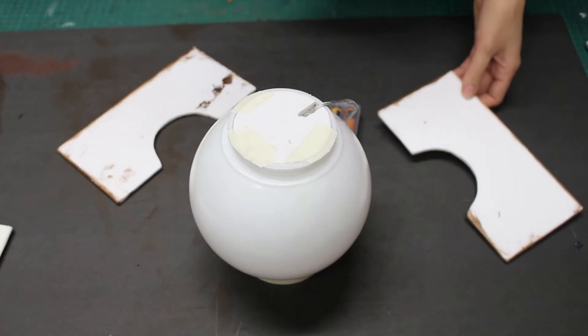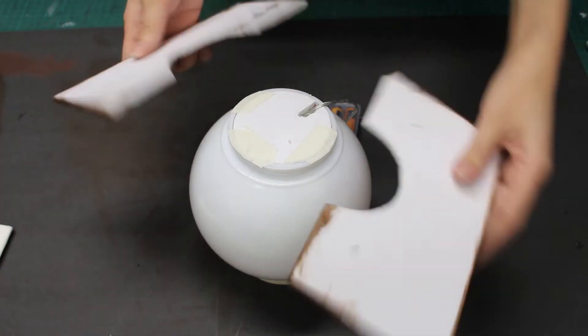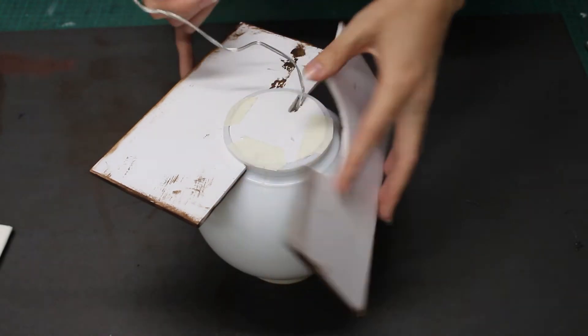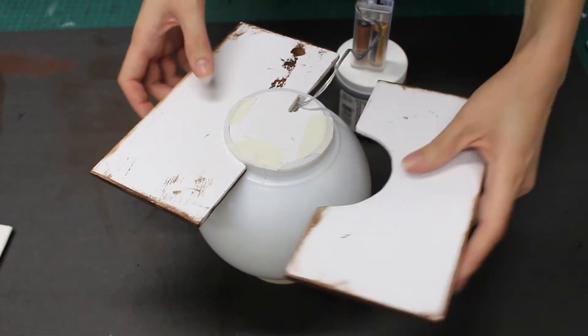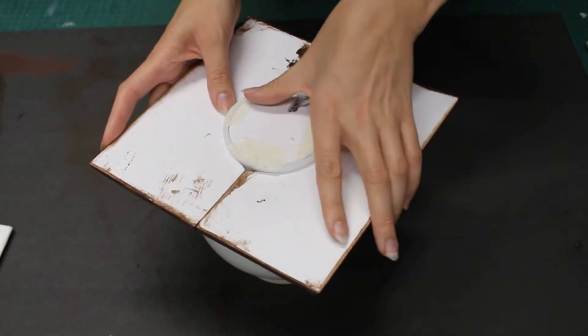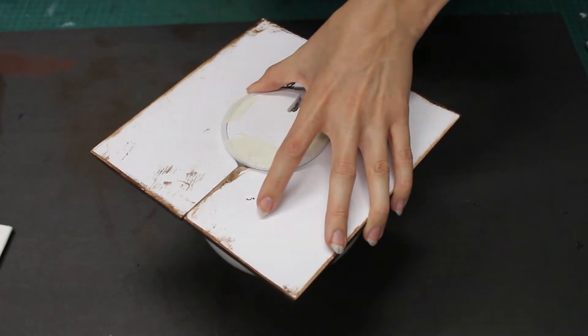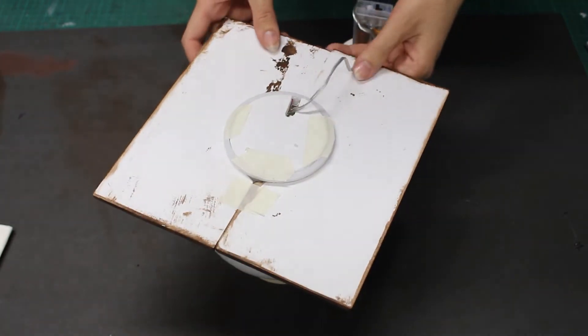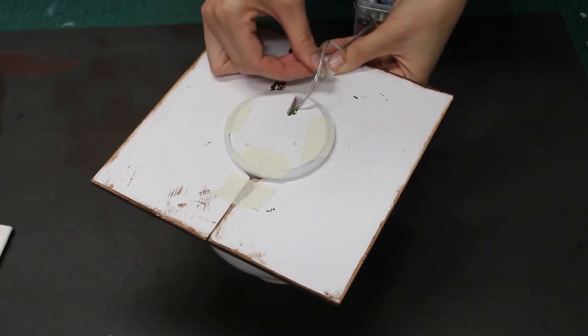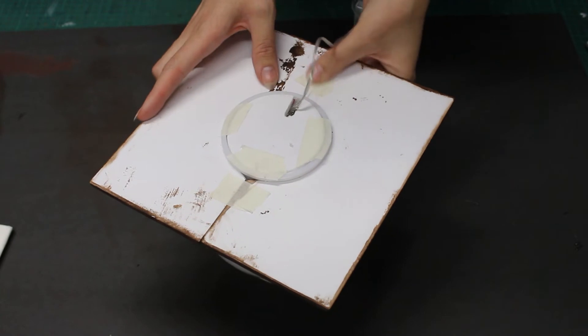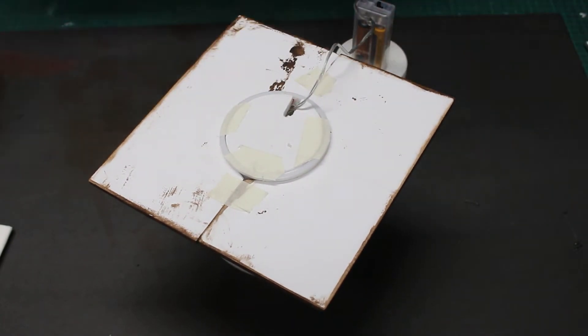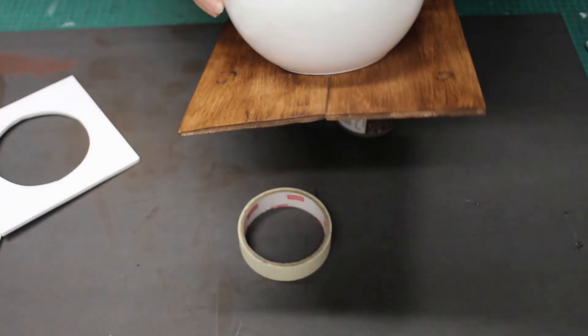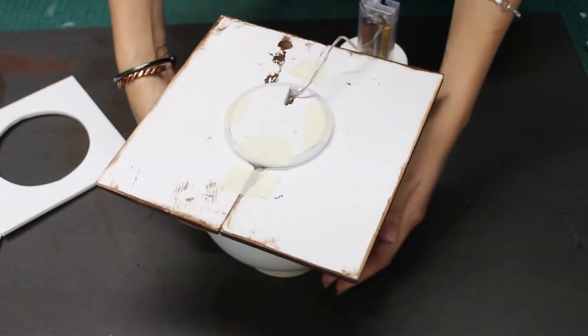Now we're going to assemble the top piece. I'm going to use a little bit of tape to hold these pieces together. Then I will attach my brace piece with a generous amount of white glue.